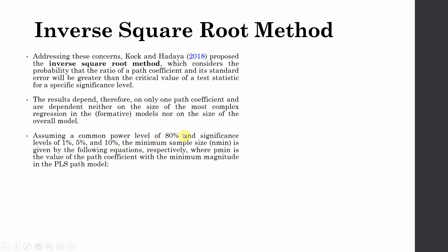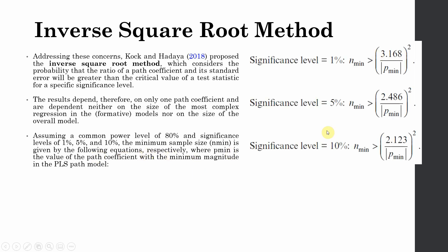Assuming a common power level of 80% and significance level of 1%, 5%, or 10%, the minimum sample size N minimum is given by the following equations. Here are the equations. If you've got significance level 1%, this is your equation. If you've got significance level 5%, this is your equation. And if you've got a significance level of 10%, this is your equation.